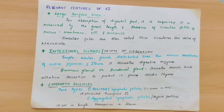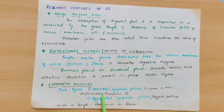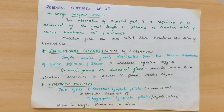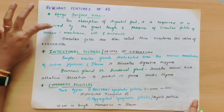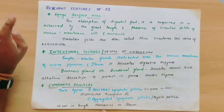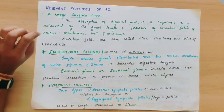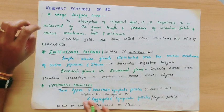Next are lymphatic follicles. Lymphatic follicles are present in the small intestine. There are two types: solitary lymphatic follicles and aggregated lymphatic follicles (Peyer's patches). Solitary lymphatic follicles are present throughout the small intestine with a 1-2 mm diameter. The Peyer's patches are about 10 cm in length and are present in the ileum. These are the three special features of the small intestine: large surface area, intestinal glands for digestive enzyme secretion, and lymphatic follicles.